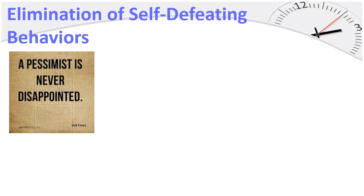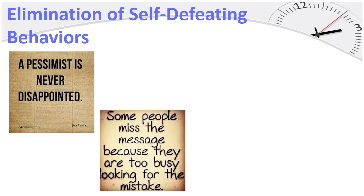You need to eliminate self-defeating behaviors. A pessimist always views their current situation as negative and anticipates negative outcomes — in true fashion, a pessimist is never disappointed. A person who nitpicks rationalizes decisions through finding the tiniest faults or mistakes, often missing out on what they have the potential to learn. Some people miss the message because they are too busy looking for the mistake. The worrier often causes multiple problems for themselves with fear.